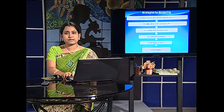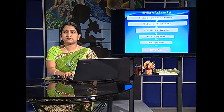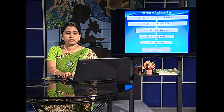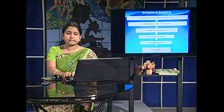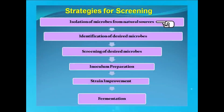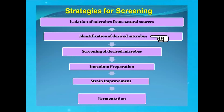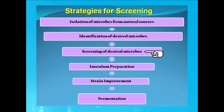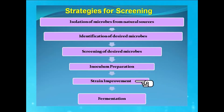There are certain strategies for screening of microbes. Number one is the isolation of microbes from natural sources, then comes the identification of the desired microbes, then screening of the desired microbes, then inoculum preparation, strain improvement, and finally fermentation.